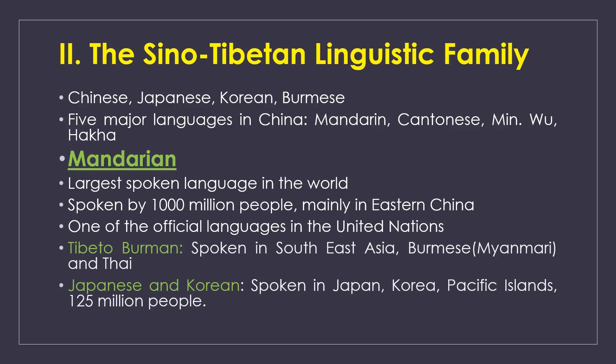This is the Sino-Tibetan linguistic family, which includes Chinese, Japanese, Korean, and Burmese. There are five major languages in China: Mandarin, Cantonese, Min, Wu, and Hakka. Mandarin is the most widely spoken, used by around 1,000 million people, particularly in eastern China, and is one of the official languages of the United Nations.